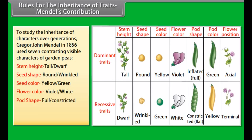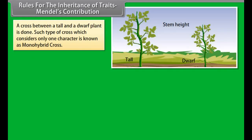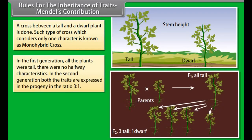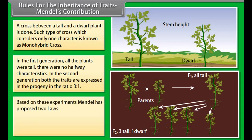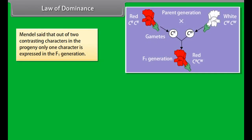To study the inheritance of characters over generations, Gregor John Mendel in 1856 used seven contrasting visible characters of garden peas: stem height (tall/dwarf), seed shape (round/wrinkled), seed color (yellow/green), flower color (violet/white), pod shape (full/constricted), pod color (green/yellow), and flower position. A cross between a tall and dwarf plant that considers only one character is known as a monohybrid cross.